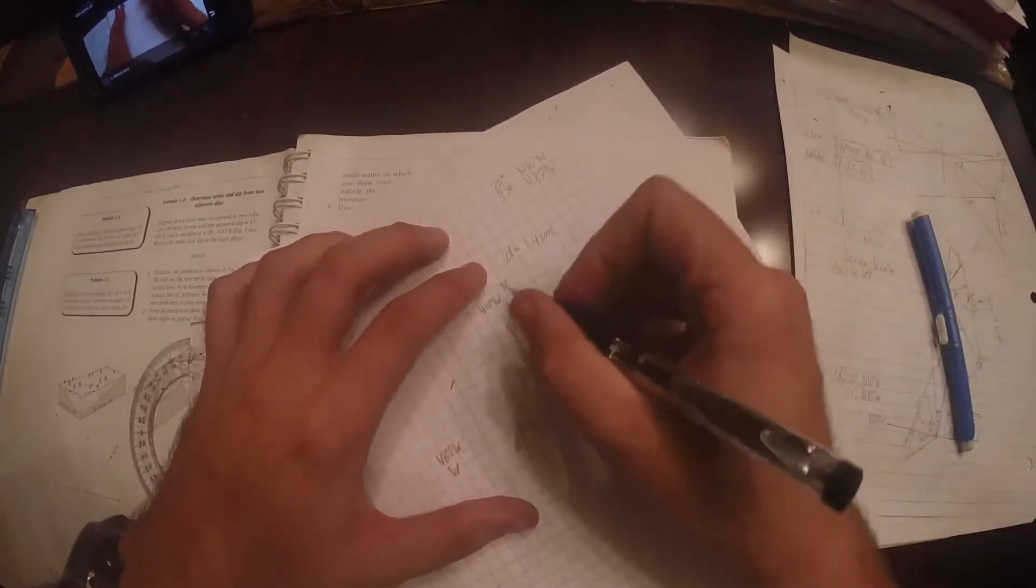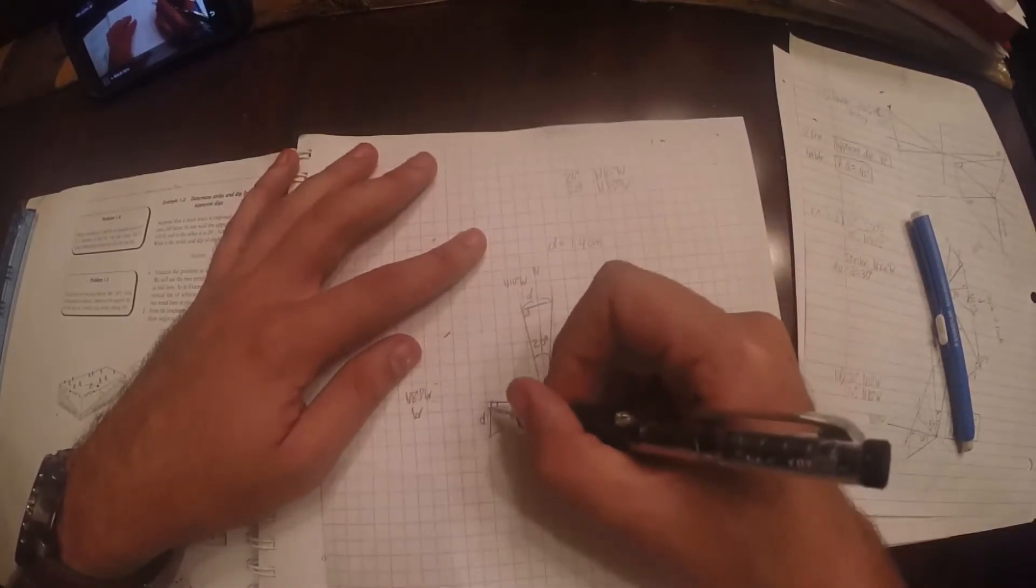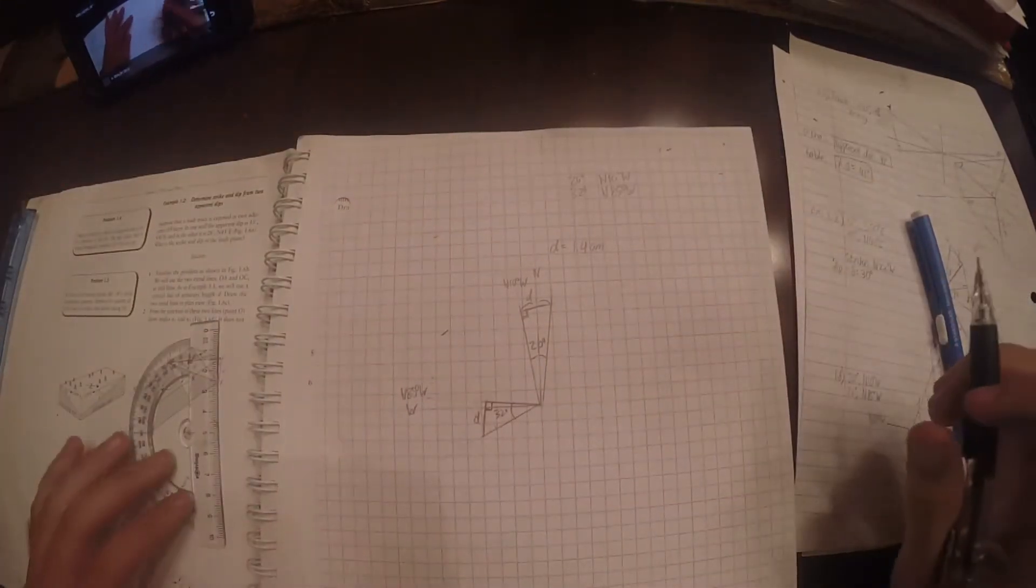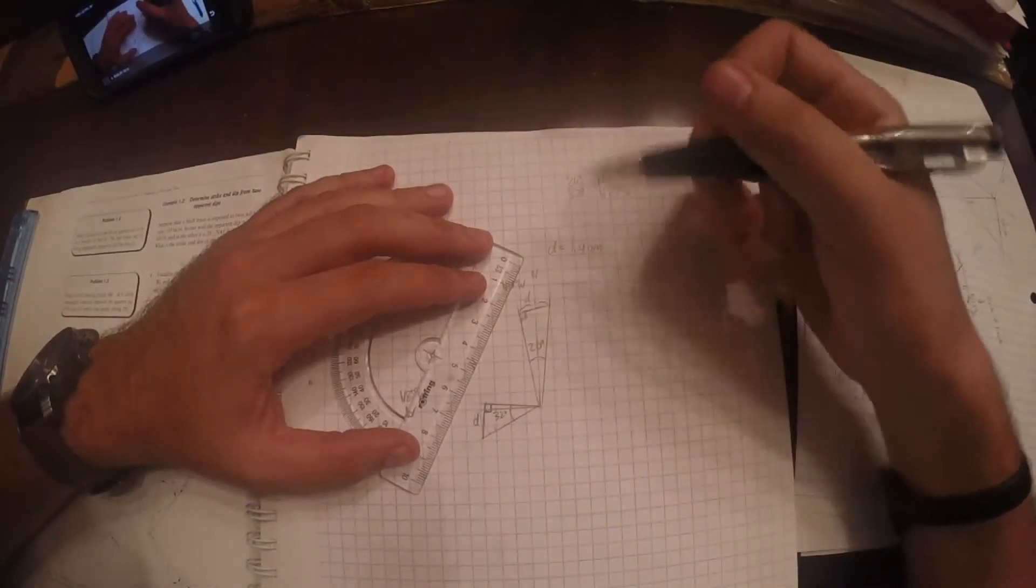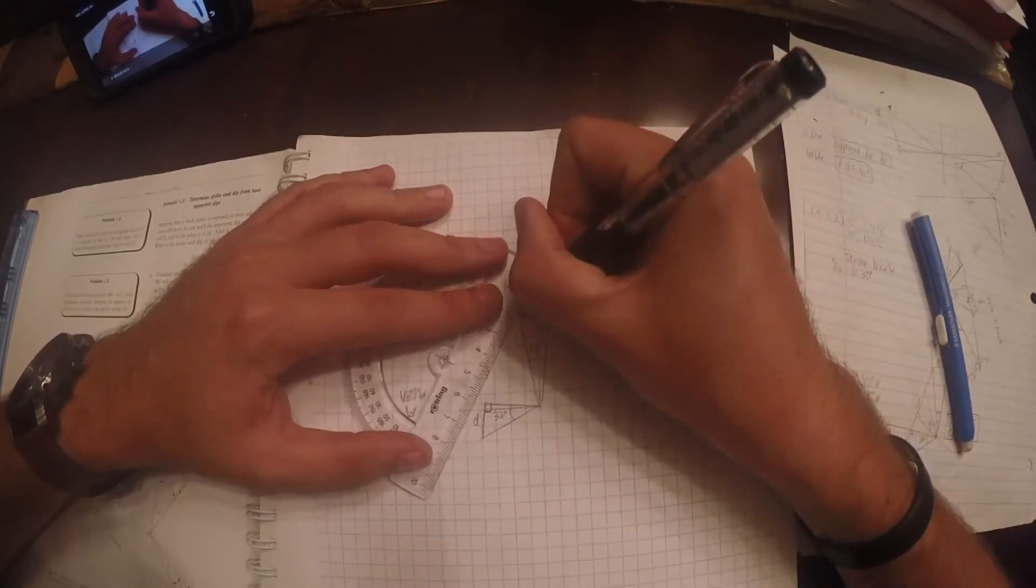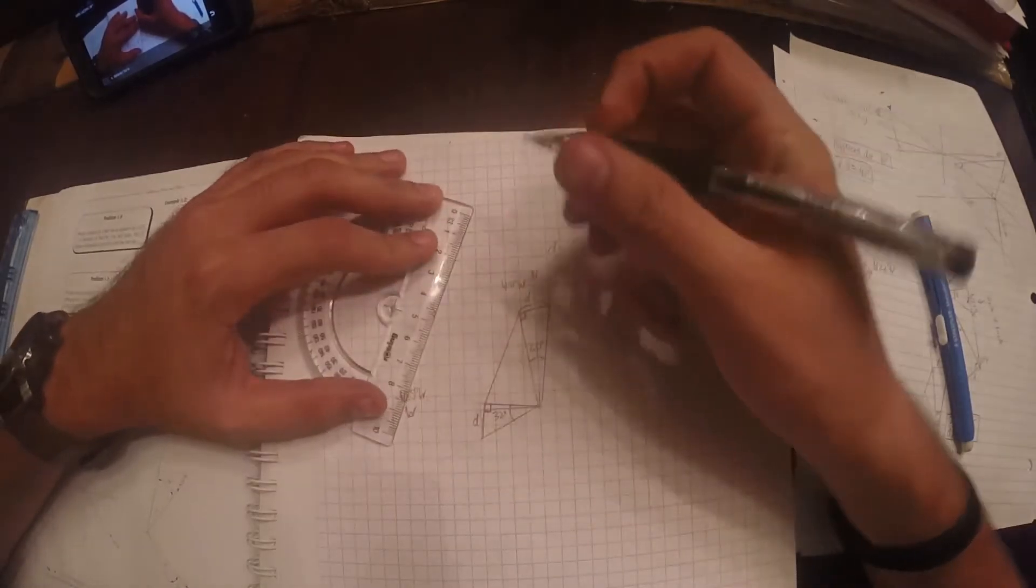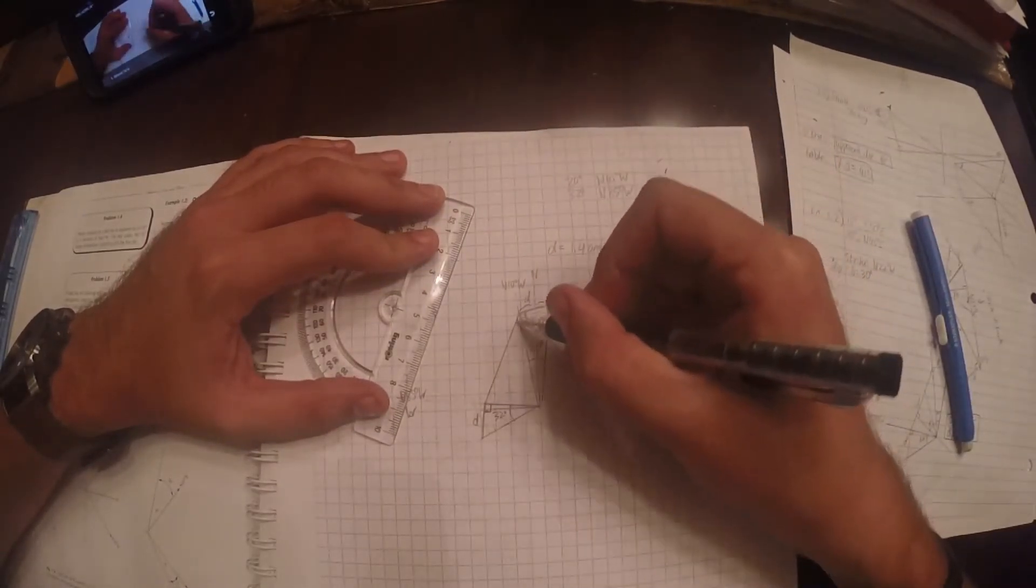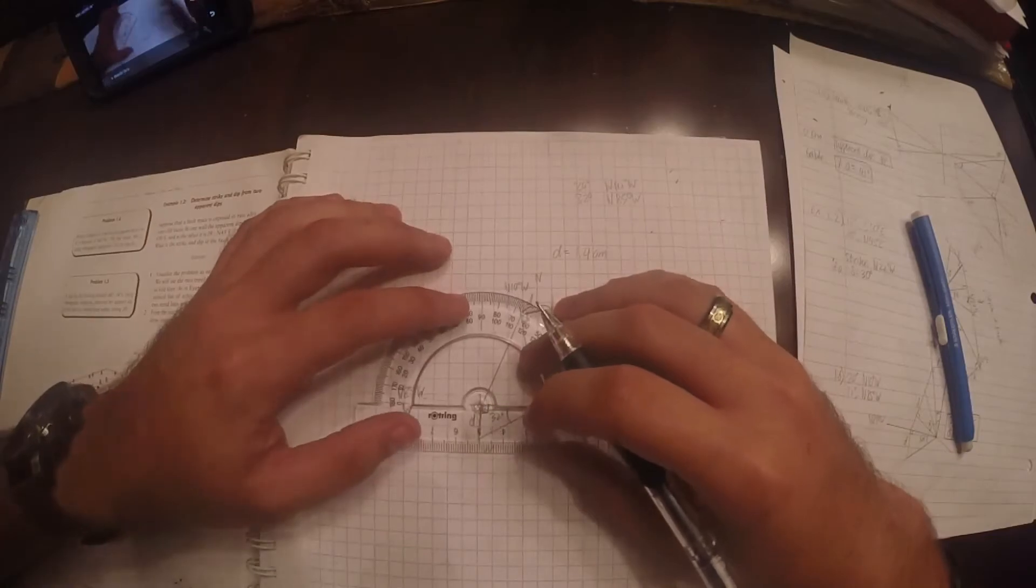Okay. So again, distance D, distance D. That's significant just so you know you have the correct proportion triangles. Then you're going to go from this right triangle to this right angle and draw your line from one to the other. This line indicates your strike. Well, your strike, not new strike. You haven't started with one.